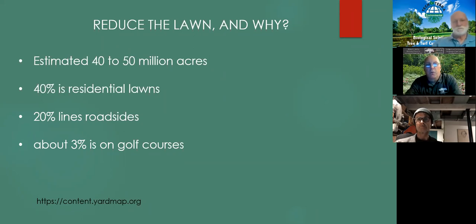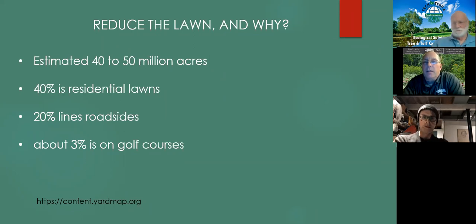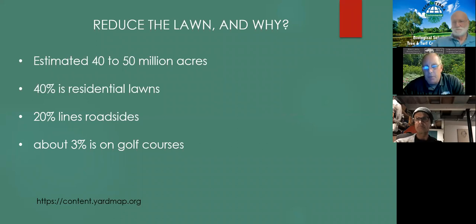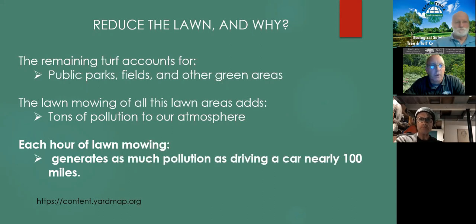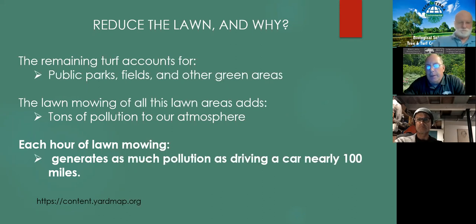Roughly 40% of maintained lawn is residential, 20% is roadside, and 3% is on golf courses. From a percentage standpoint, golf courses, while they do spray a lot of pesticides and are a big habitat fragmentation issue, are finding ways to get around that — going organic and planting native species. Public parks, fields, and other green acres also contribute tons of pollution from lawn mowing equipment. Each lawnmower generates as much pollution as driving a car a ridiculous distance, so that's why we want to reduce lawns and incorporate native plants.